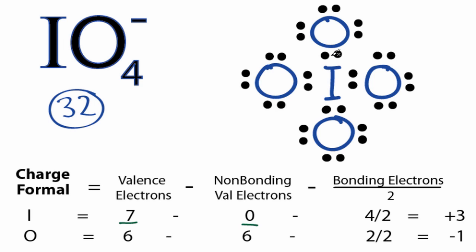And then bonding, we have 2, 4, 6, 8, so we actually have 8 over 2. So 7 minus 4 gives us a plus 3. So the formal charge on the iodine is plus 3.